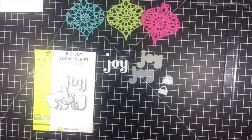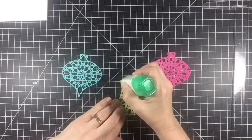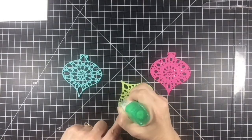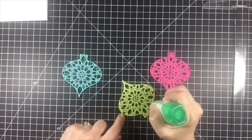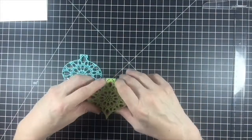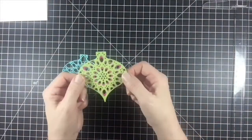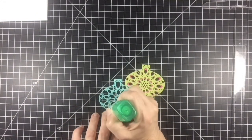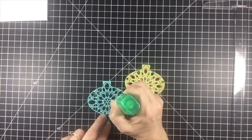I usually use spray adhesive to adhere my layered elements together, but this week I'm using liquid adhesive because it gives you a little bit of extra wiggle time to make sure your dies are adhered together evenly before the glue dries. It takes a little bit longer to add the glue to the panels, but that little bit of extra time gives you a much better end result.